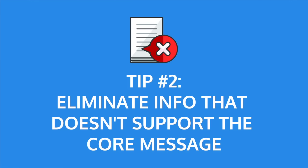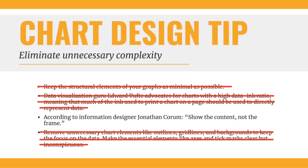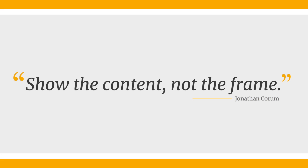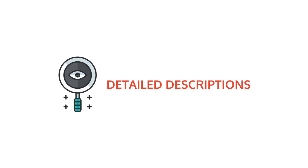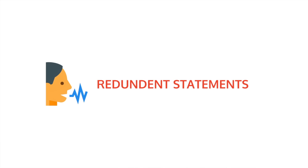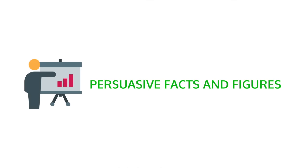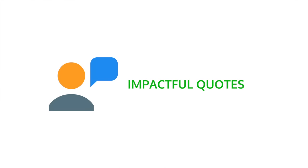Tip number two: eliminate any information that doesn't support your core message. Once you've identified the core message, you can cut any information that doesn't support it. By cutting extra, unnecessary details, you can turn boring, text-heavy slides into memorable slides that deliver impact. Information to get rid of includes detailed descriptions, background information, trivia, redundant statements, and explanations of common knowledge. Keep persuasive facts and figures, illustrative examples, and impactful quotes.